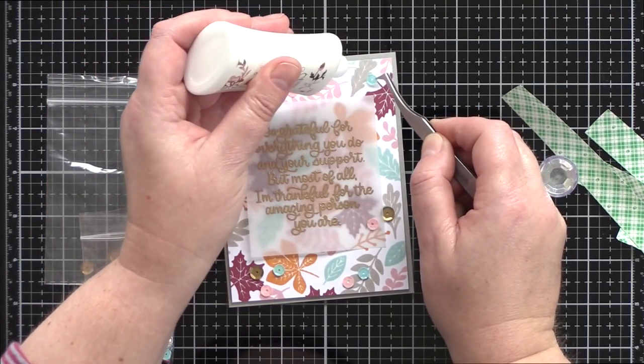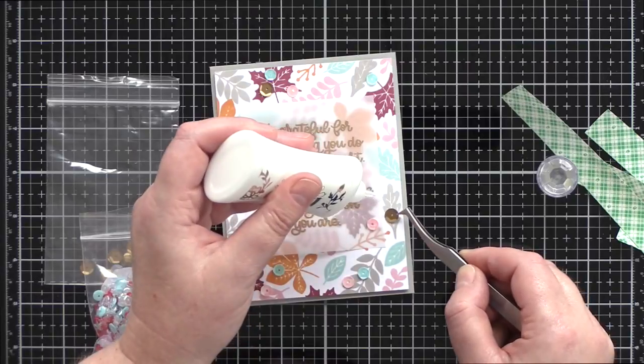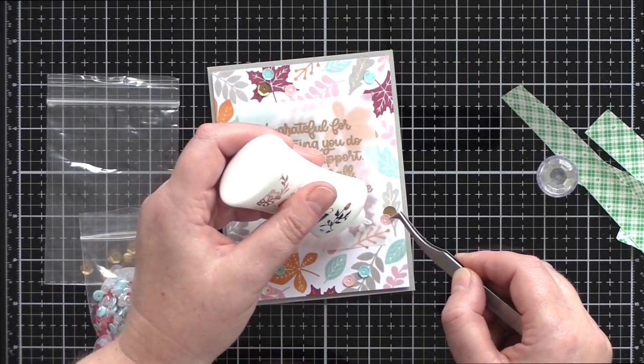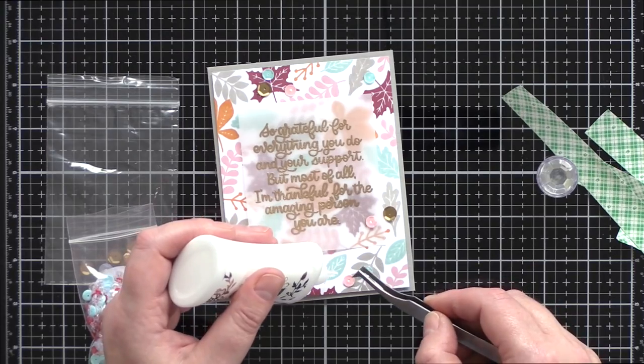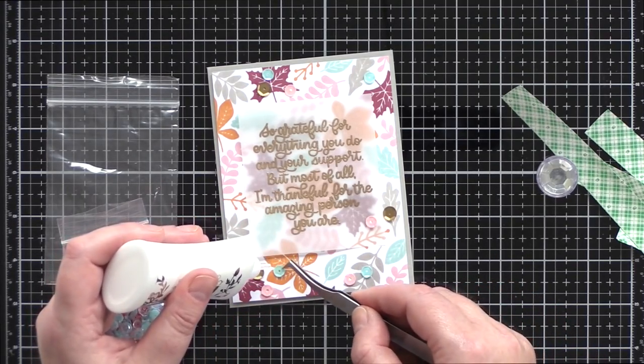Finally, I embellished the card with bronze and Christmas magic sequins from Simon Says Stamp along with some pink sequins from Little Things from Lucy's Cards and I kept those in place with Nouveau Deluxe Adhesive.